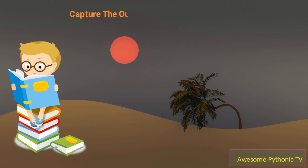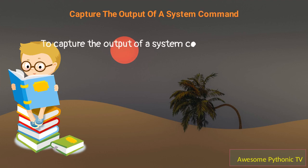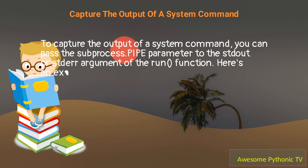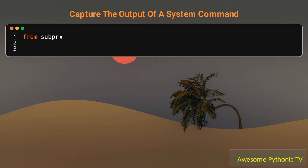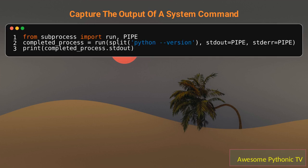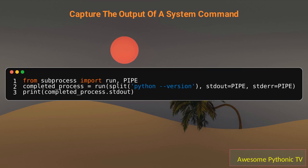How can you capture the output of a system command? To capture the output of a system command, you can pass the subprocess.PIPE parameter to the stdout or stderr argument of the run function. This will output the standard output of the system command.